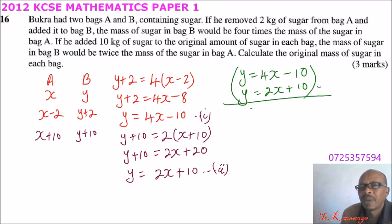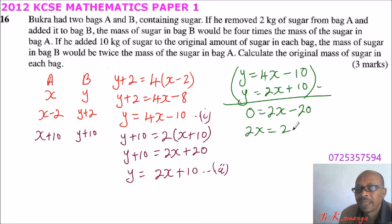So Y minus Y is zero, is equals to 2X minus, 4X minus 2X, that will give you 2X. 10 minus 10, that will give you minus 20. 10 minus plus positive 10. So you take 2X is equals to, 20X is equals, so you divide both sides by 2 you get 10. If X is 10.